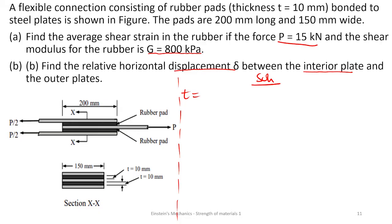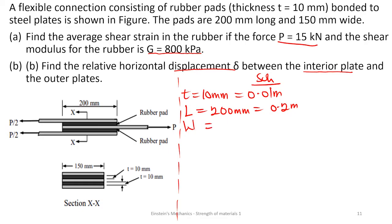We can write down some parameters from the question. The thickness t is 10 millimeters, which converts to 0.01 meters. The length is 200 millimeters, which is 0.2 meters. The width is 150 millimeters, which is 0.15 meters.